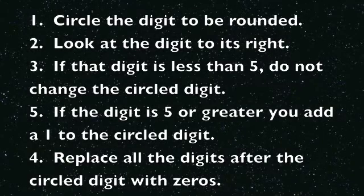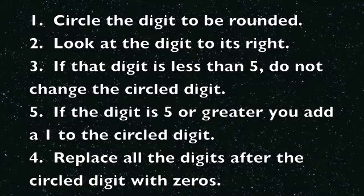And now for the part of the lesson that we call review. Circle the digit to be rounded. Look at the digit to its right. If that digit is less than five, do not change the circled digit. If the digit is five or greater, you add a one to the circled digit. Replace all the numbers following the circled digit with zeros.